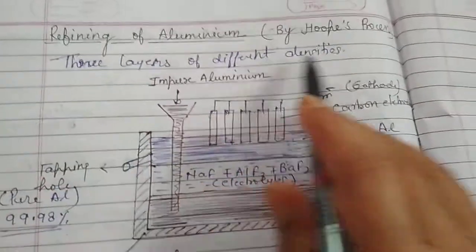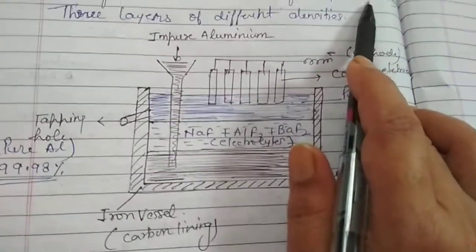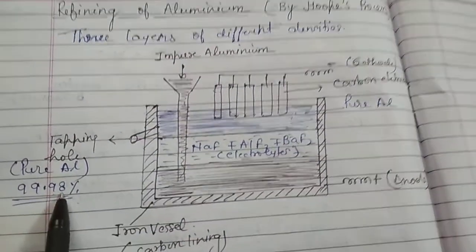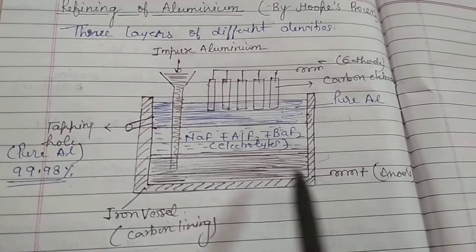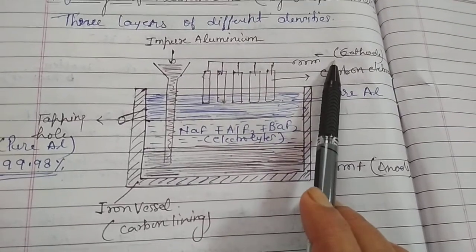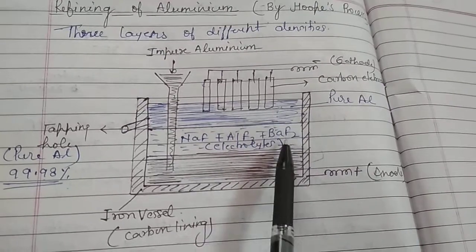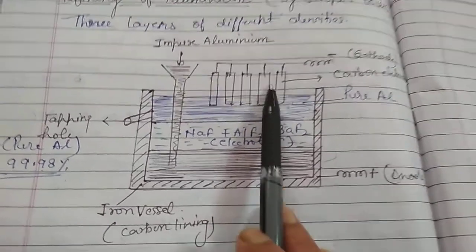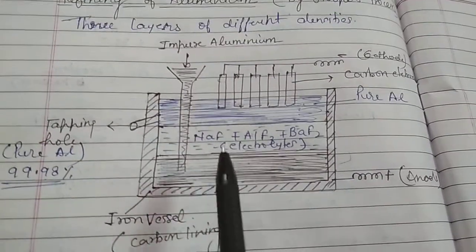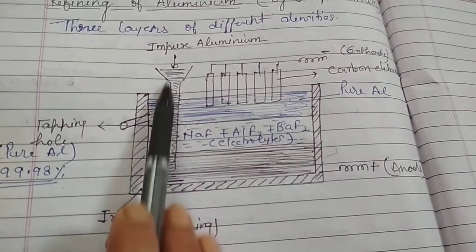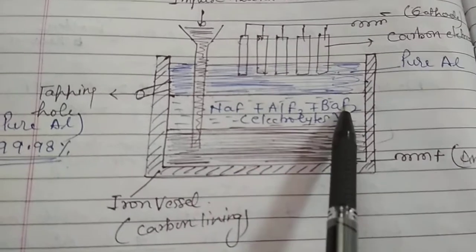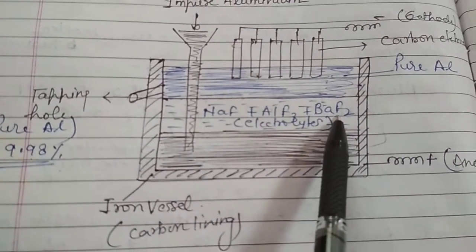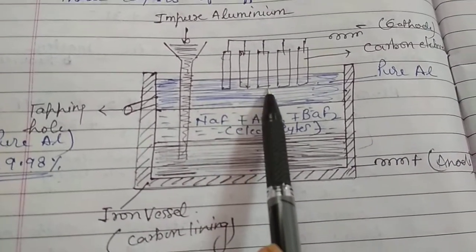Refining of aluminium again by electrolysis using the Hoops process can give us 99.98% pure aluminium. For this process, we take an iron tank with carbon lining which works like the anode, and carbon rods that work like the cathode. In the tank, we take three layers having different specific gravities. The lowermost layer is of impure aluminium, added by a hopper. The middle layer is the electrolyte containing fluorides of sodium, aluminium, and barium — NaF, AlF₃, and BaF₂. The uppermost layer is of pure aluminium.